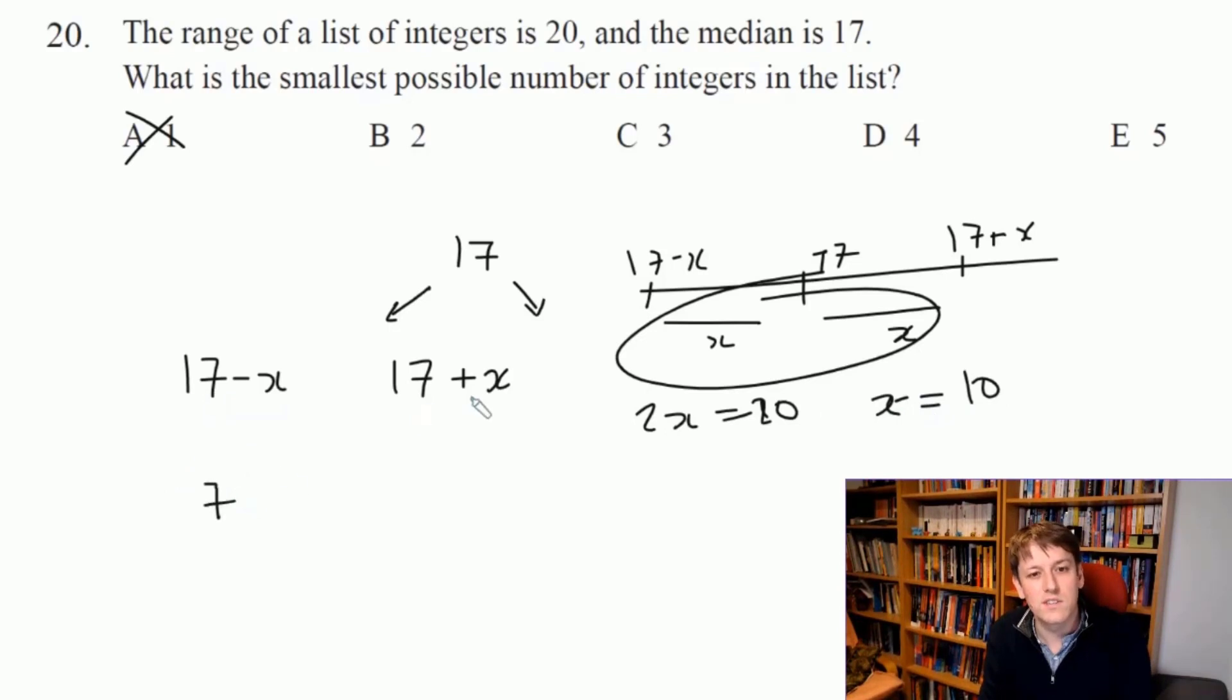I can do 17 minus X is 7. 17 plus X is 27. And there's my list of two numbers, which have a range of 20 and a median of 17. So the answer here is B, 2. And we don't need to consider anything else because that's the smallest possible number of integers in the list.